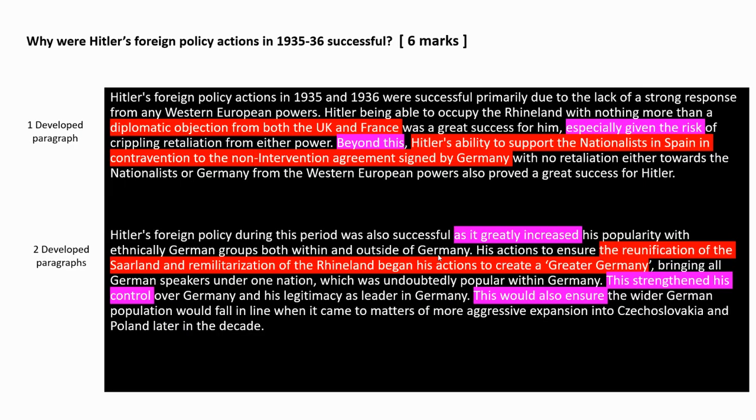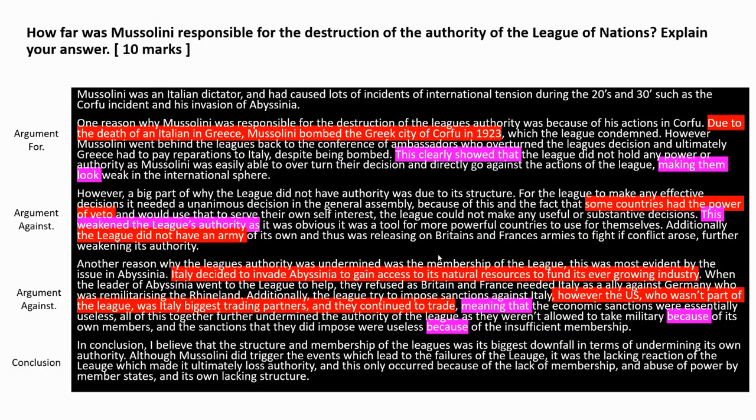Right, six markers. Why were Hitler's foreign policy actions in 1935, 1936 successful? I'm not going to read through those. You've got eyes, you can pause the video, you can read through them yourselves. In red, I've tried to highlight facts, figures, examples that she's used in answering this question. And then I've got in pink the kind of phrases that are explaining phrases, phrases that if you write these sorts of things, you're going to be automatically forcing yourself to explain and justify your points. So that's really good. And then the same thing here with the 10 marker. This one here is about Mussolini, and to what extent or how far he was responsible for the destruction of the League of Nations authority. And same thing again, in red, examples, detail, and in purple or pink, it's the explaining phrases. And you can see the structure there is really good. Once again, 10 marker, and you've got one argument for, two arguments against, and a conclusion. And she's also got a small little introduction at the beginning.